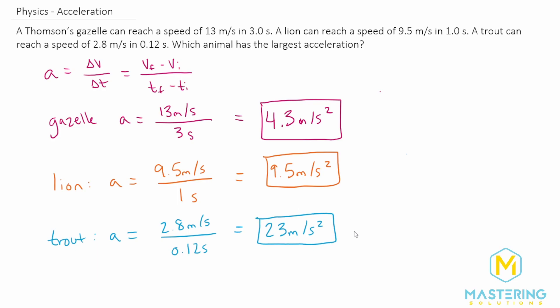The trout has the fastest acceleration here. This is a really good problem because they give us three scenarios, and if you get stuck and don't know how to calculate acceleration, you might assume that the one with 9.5 in 1 second—the lion—has the highest number with the smaller time, so that one is probably it. A lot of people might guess that the lion would have the fastest acceleration.